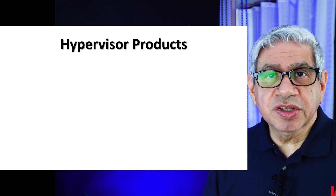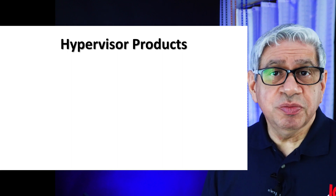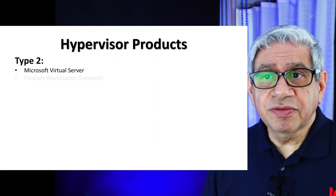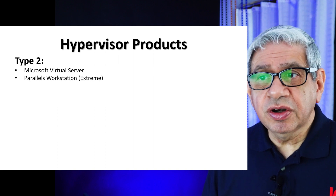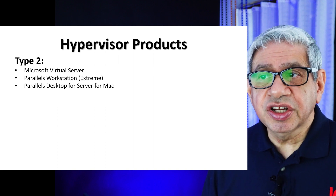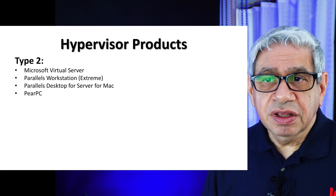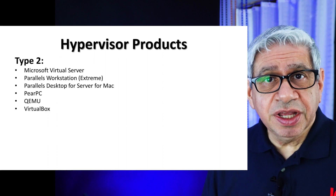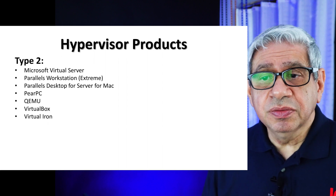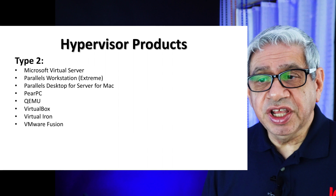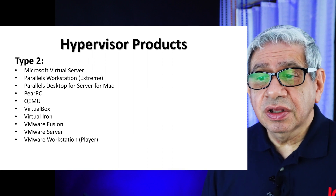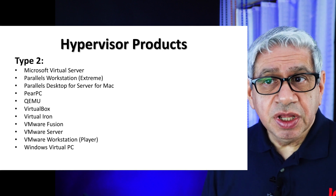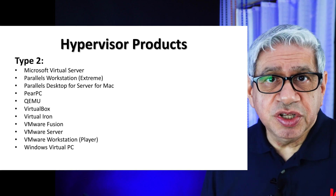Now let's talk quickly about some various hypervisor products you may have heard about, starting again with Type 2. These include Microsoft Virtual Server, Parallels Workstation Extreme, Parallels Desktop, Pear PC, VirtualBox — which I've done other videos on — Virtual Iron, VMware Fusion, VMware Server, Workstation Player, and Windows Virtual PC. There are others; I just picked the top ones to include in the list.